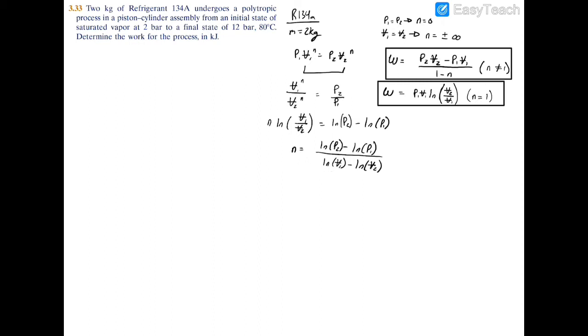Now we'll plug in our givens. The natural log of P2 which is 12 bar—I'm going to convert everything into kilopascals, so I multiply by 100 to get 1200 kilopascals—minus the natural log of 200 kilopascals, divided by...